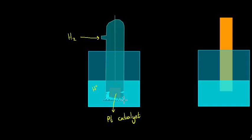The hydrogen gas pushes the electrolyte solution out of the test tube. At the corner of the setup, hydrogen gas and electrolyte solution meet, along with the platinum catalyst. This is the connection point where all three meet, establishing contact between the hydrogen gas and the electrolyte.